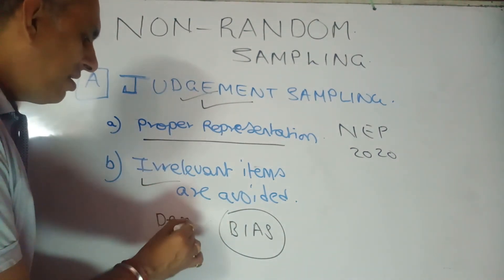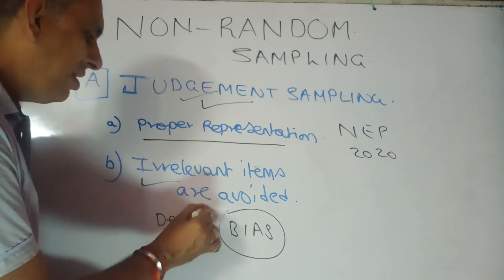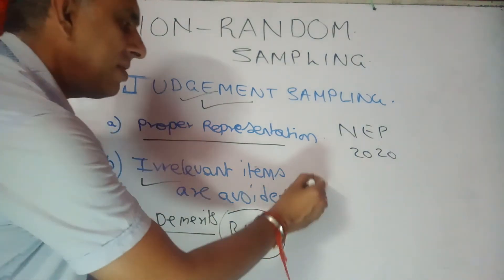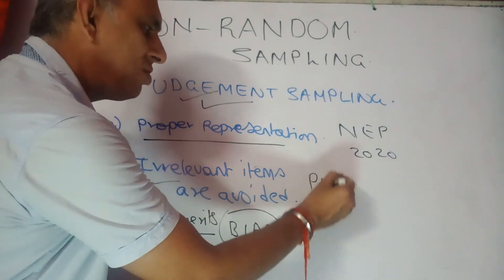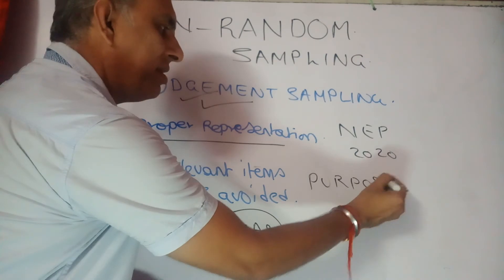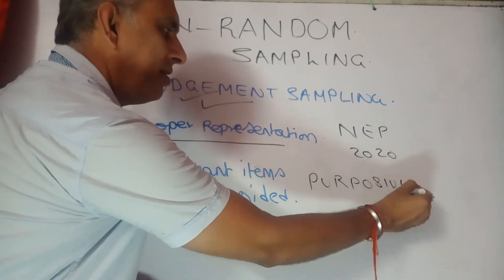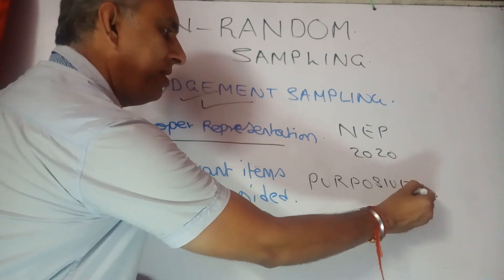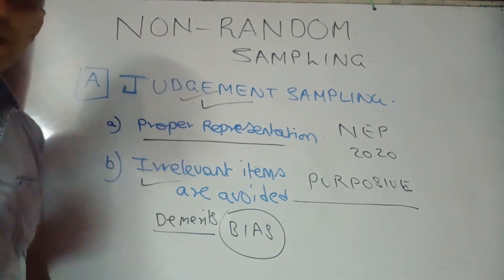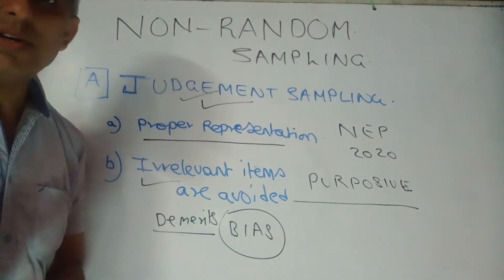It is also called purposive sampling, students. So remember the other name — apart from judgment sampling, it is also called purposive sampling. Thank you.